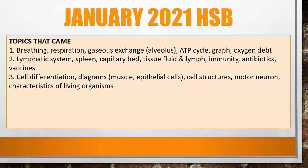For question three, they dealt with cell differentiation — diagrams of muscle cells and epithelial cells which you had to identify. They also dealt with cell structures, including the motor neuron and how the loss of the myelin sheath would affect the transmission of nervous impulses. Finishing off that question, they dealt with the characteristics of living organisms.